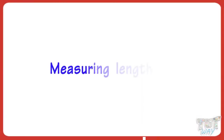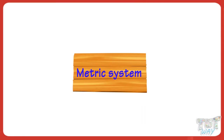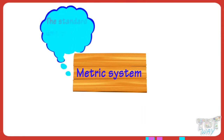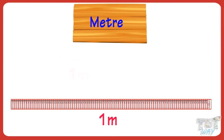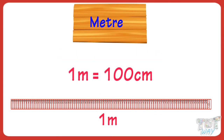We will first learn about measuring length in the metric system. The standard unit of length is meter. A meter is divided into 100 equal parts called centimeters. 1 meter equals 100 centimeters.